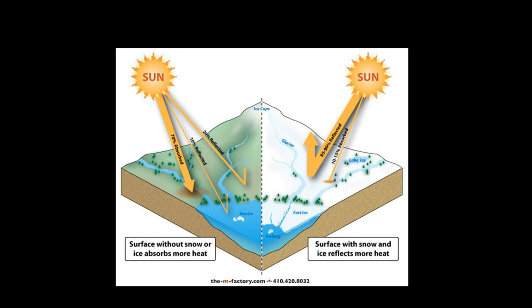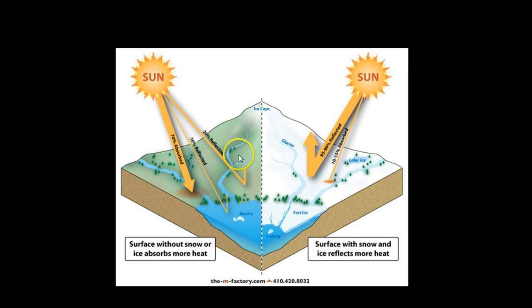The albedo changes depending on what's on the surface of the Earth. On the left-hand side of this slide there's no ice or snow, and on the right there is. A surface without snow or ice absorbs more heat and light. A surface with more snow and ice reflects that heat and light. So the conclusion is: if the surface reflects heat, it's much cooler; if it absorbs heat, it's much warmer. We call that albedo — the reflectivity.